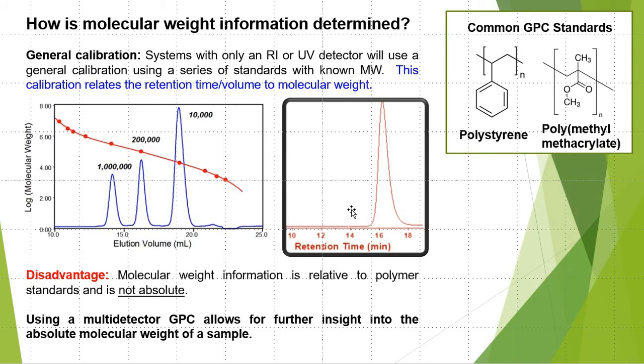Then when you go to run an unknown polymer sample, as shown here on the right, it'll relate its retention time to the calibration curve created earlier, and you can get molecular weight information such as number average, weight average molecular weights, and polydispersity.